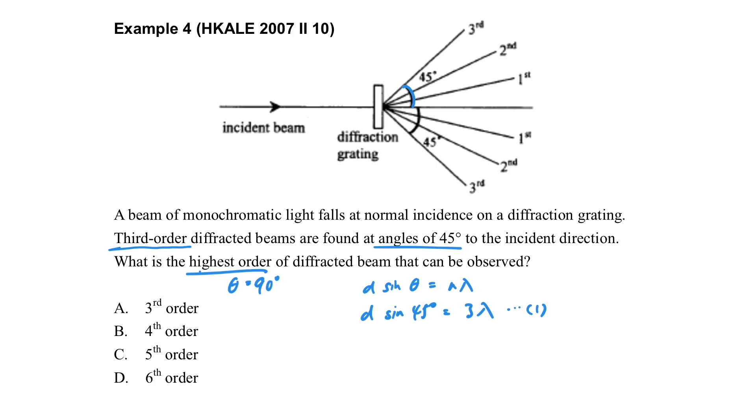So we can use what we can observe in the figure to formulate the first equation, and then from the second equation, by substituting the theta as 90, then we can solve for the n.